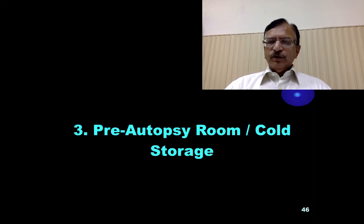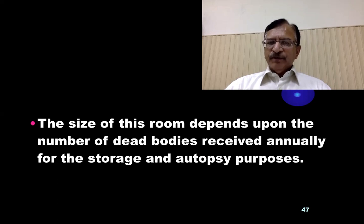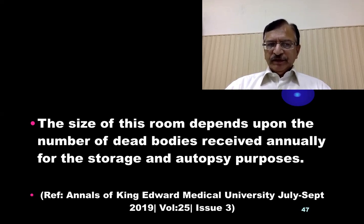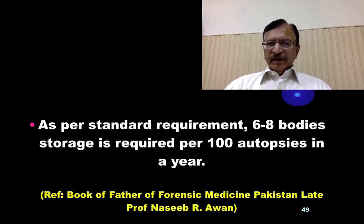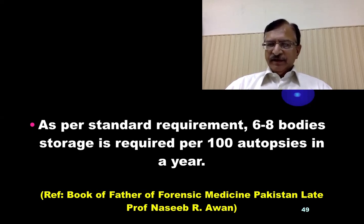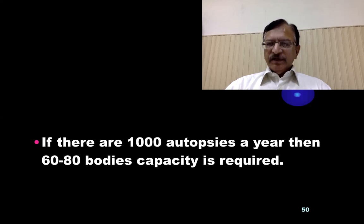Then the pre-autopsy room or cold storage. The size of this room depends upon the number of dead bodies being received annually for storage and autopsy purposes. It should be spacious and able to accommodate extra bodies in case of emergency like mass disaster. As per standard requirement, six to eight bodies' storage is required per hundred autopsies in a year — from the book of the father of forensic medicine of Pakistan, Professor Naseeb Barawan. If there are 1,000 autopsies per year in a center, then 60 to 80 bodies' capacity is required.